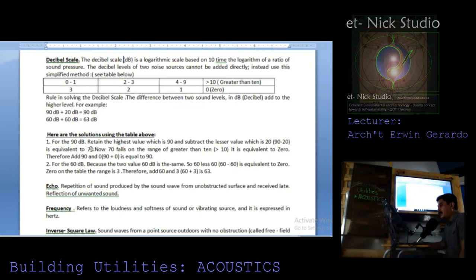For 90 dB: retain the highest value which is 90, subtract the lesser value 20 to get 70. Since 70 is greater than 10, the equivalent is 0. Therefore 90 plus 0 equals 90 dB. For the second problem at 60 dB: since both values are the same, 60 minus 60 equals 0. Zero falls under the first range, so add 3. Therefore 60 plus 3 equals 63 dB.